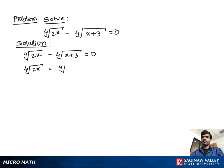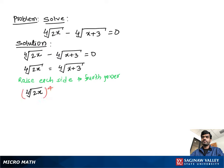Now we remove the radical sign — the fourth root. To do this, we raise each side to the fourth power to remove the radical sign.